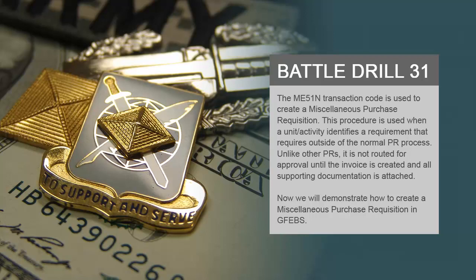The ME51N transaction code is used to create a miscellaneous purchase requisition. This procedure is used when a unit activity identifies a requirement that requires outside of the normal PR process. Unlike other PRs, it is not routed for approval until the invoice is created and all supporting documentation is attached.